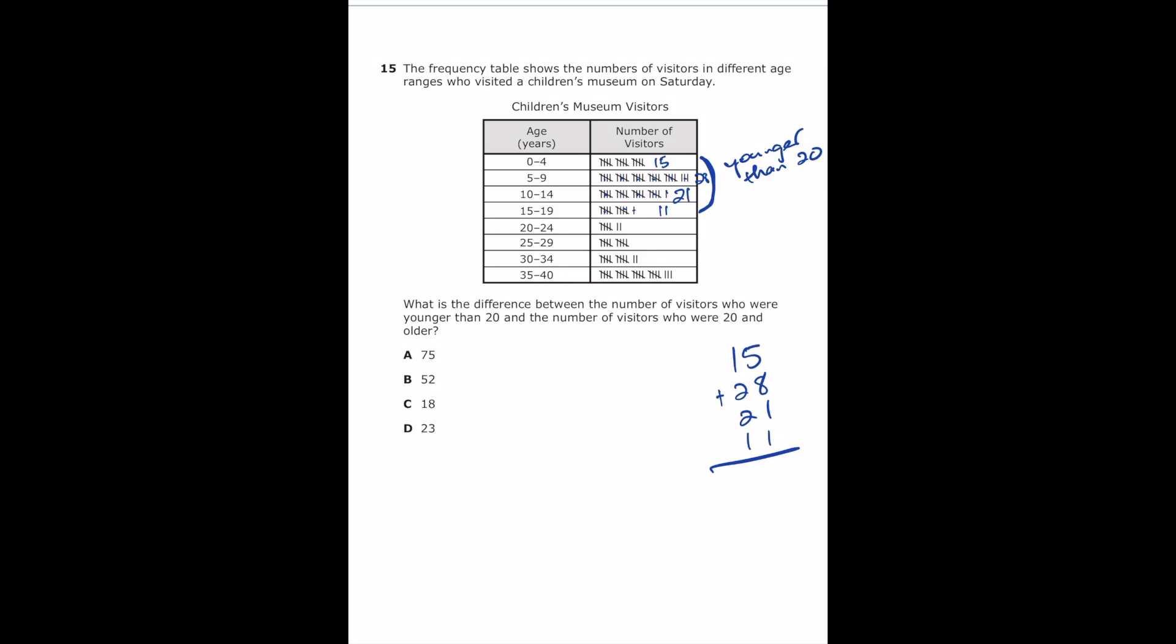So let's add those numbers up. So 15 plus 28 plus 21 plus 11. So 5 plus 8 is 13, plus 1 is 14, plus 1 is 15. 1 plus 1 is 2, plus 2 is 4, plus 2 is 6, plus 1 is 7. So that section is equal to 75.